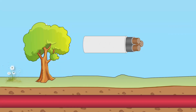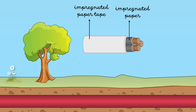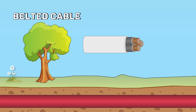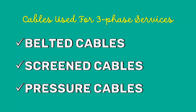As mentioned earlier, we use impregnated paper for insulation. The insulation resistance of paper is quite small along the layers, so it is suitable only for low and medium voltages. For high voltages, we have to deal with tangential stress. If we use belted cables for high voltages, the tangential stresses set up leakage current along the layers of paper insulation. This may result in the risk of breakdown of insulation at any moment. Therefore, for high voltages beyond 22 kV, screened cables are used.